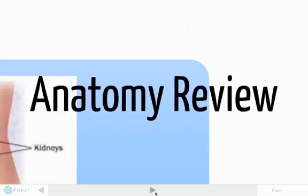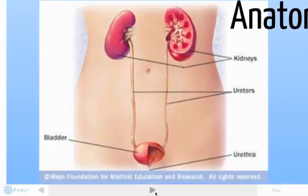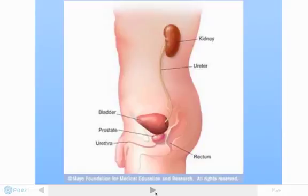We are going to start off with a brief review of anatomy. You can see our pictures here. This first picture is an anterior view of a female. You can see the kidneys, the ureters, the bladder, and the urethra.